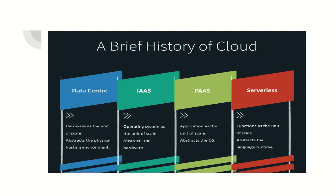Let's start with a brief history of cloud deployments. Before the cloud, we had the concept of data centers, where the unit of scale is hardware. When you wanted to add more capacity to your environment, you would add more physical hardware servers to your data center. That's how you scaled, abstracting out the physical hosting environment.